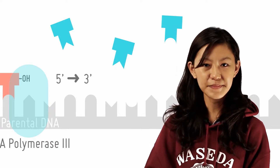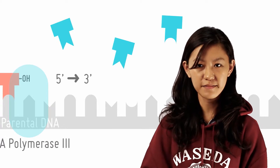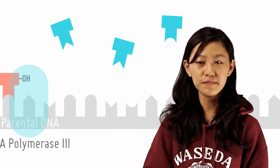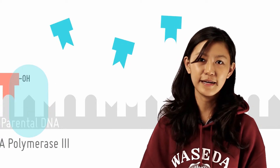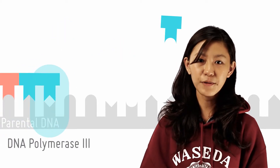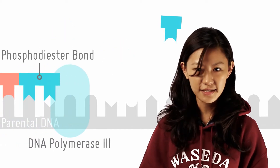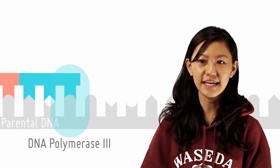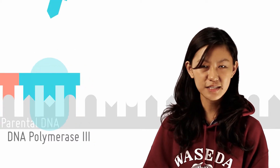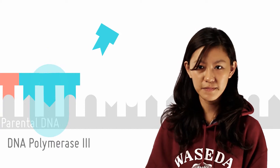It adds dNTPs to the growing strand in a 5' to 3' direction, guided by the rule of complementary base pairing using the parental strand as the template. DNA polymerase catalyzes the formation of phosphodiester bonds between adjacent dNTPs and proofreads previous regions to ensure proper base pairing.